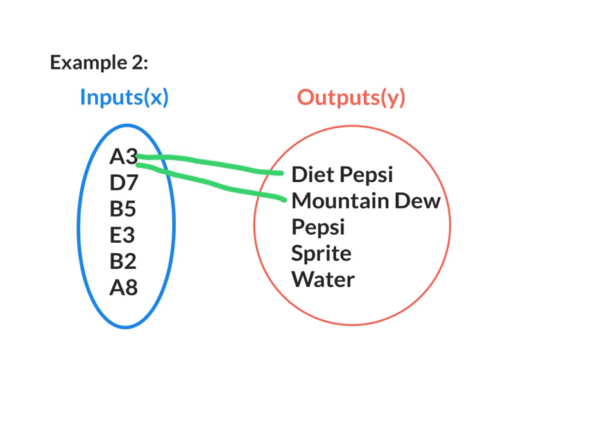Now I can complete the diagram and say D7 will give me an output of Mountain Dew. B5 will give me an output of Pepsi. E3 will give me an output of Sprite. B2 will give me an output of Water. And A8 will also give me an output of Water. What makes it not a function is the A3 having two separate outputs. So this is not a function.